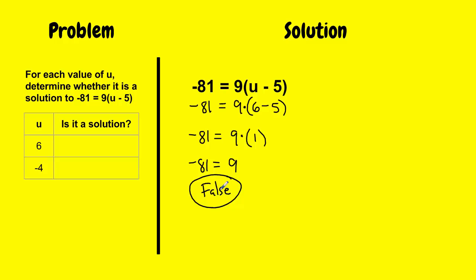If I have a false statement, I know that the answer to this question would be no. 6 is not a solution because we get two different numbers on each side. I want to get the same number. That's my goal to figure out if I have a solution.